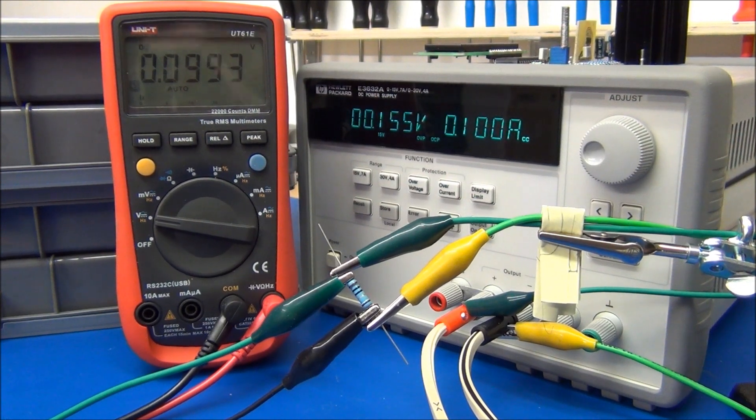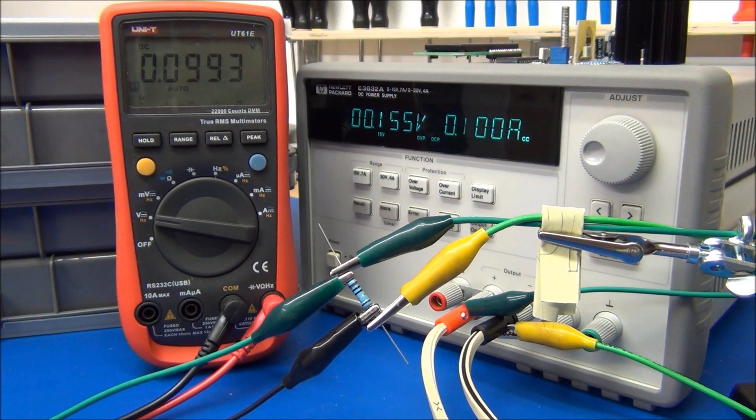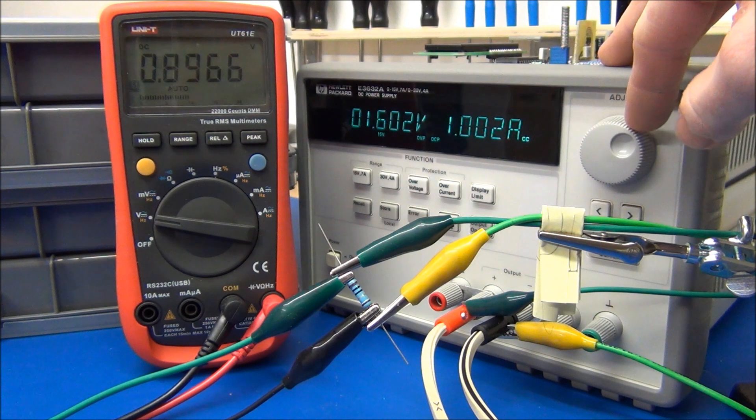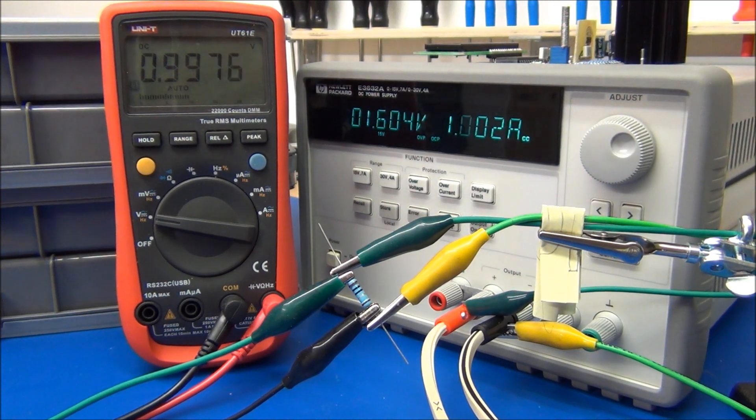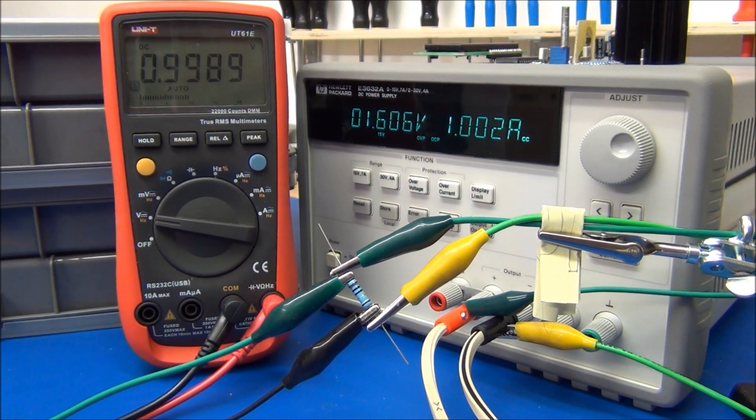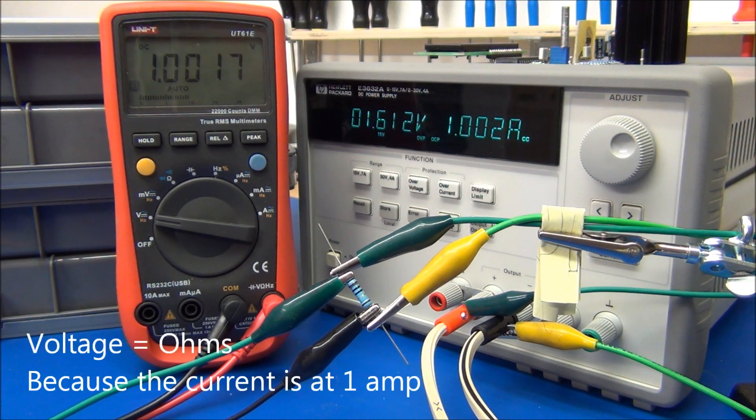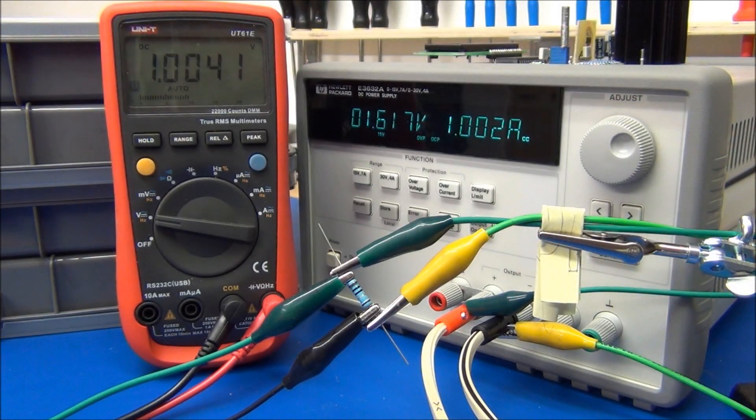So let's change the current to 1A, which will dissipate 1 watt in the resistor, which is the maximum it's rated for. And there we go. You can see the voltage is climbing. So let's let this settle for a bit and come back and see what the final result is.